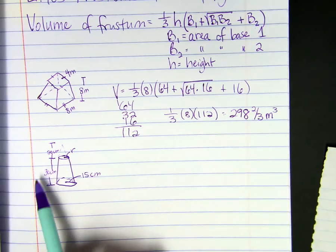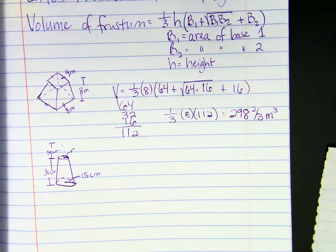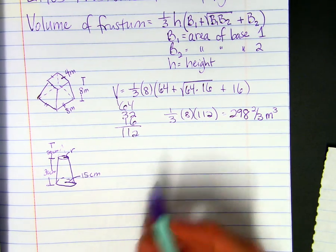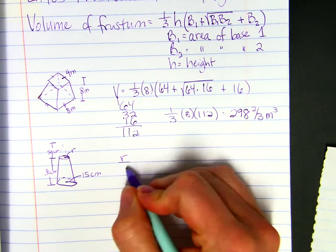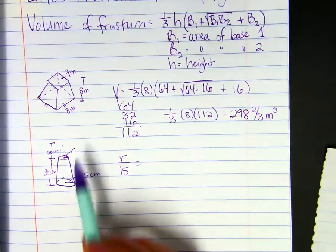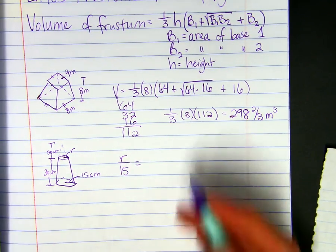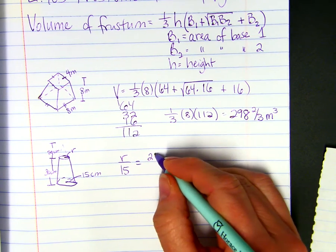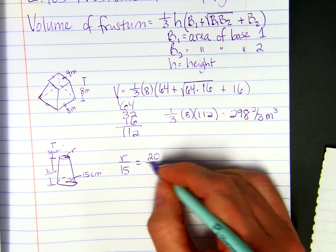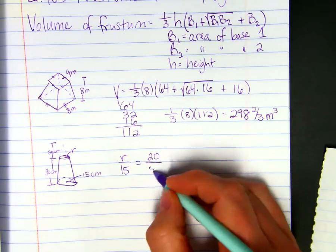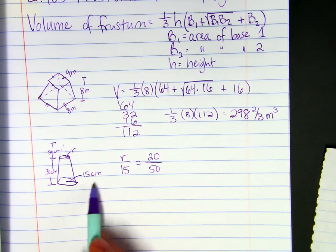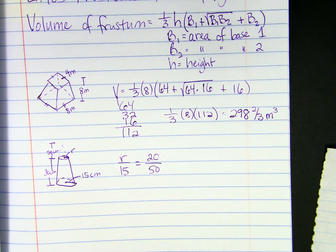To find the missing radius, it makes a proportion. You can do the fraction of the radii, so R over 15 equals the ratio of the heights. It's 20 over 50, because it's the whole height. You have to do the whole height. So R is 6.